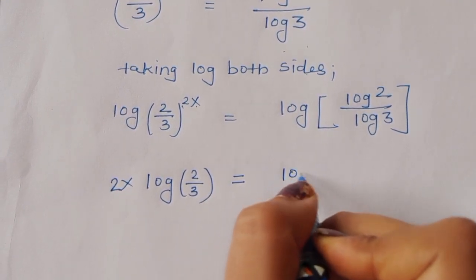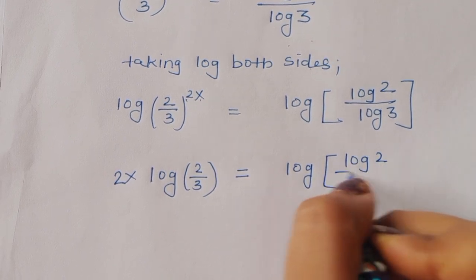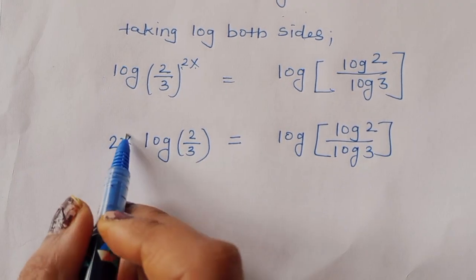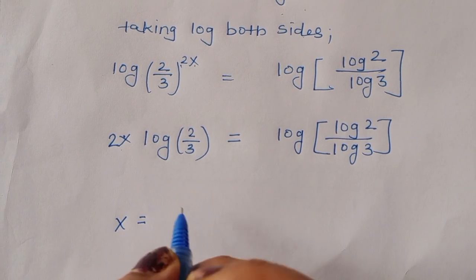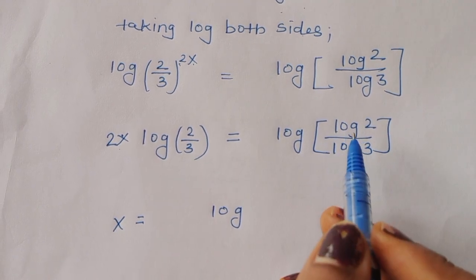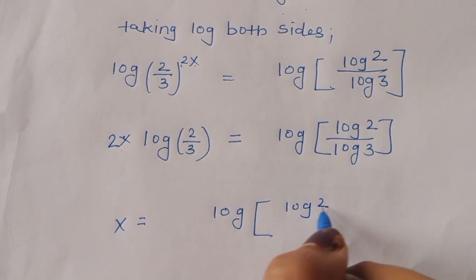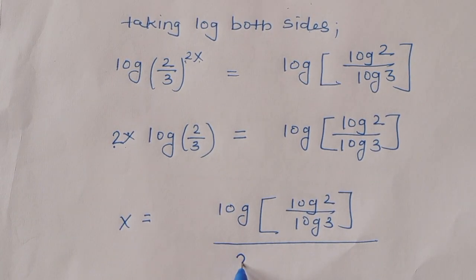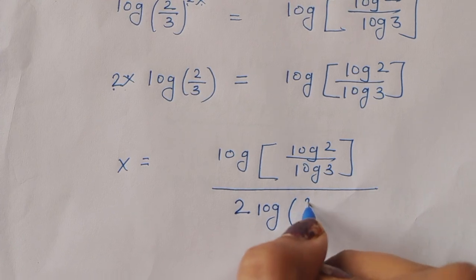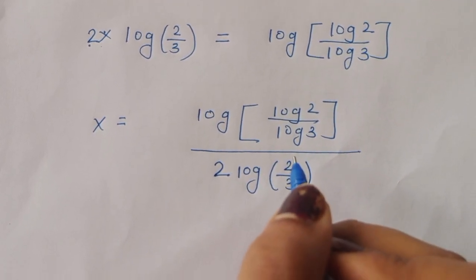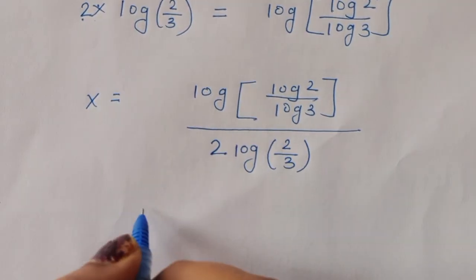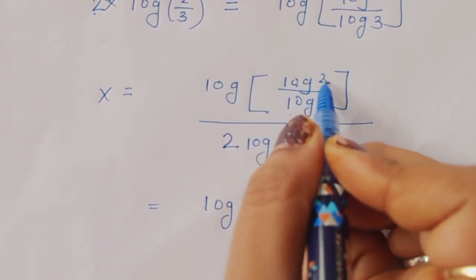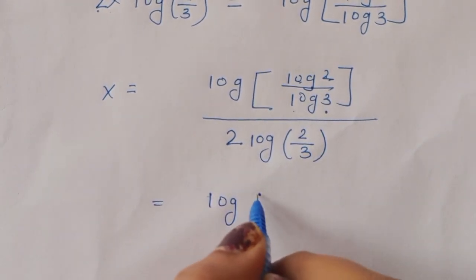Applying the log power formula: 2x times log of (2/3) is equal to log of (log 2 over log 3). Solving for x: x is equal to log of (log 2 over log 3) divided by 2 times log of (2/3). Now log of 2 over log of 3 can be written as log of 2 to the base 3 using the change of base formula.